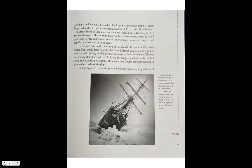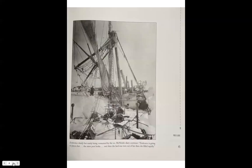On this page, the picture has a caption that says: The pressure grew stronger, forcing the ship on its side when a massive floe rammed against it on October 19, 1915. We have sprung a leak. I am working all night trying to stop it. The pressure is getting worse, McNish wrote. This picture's caption says: Endurance, slowly but surely being consumed by the ice. McNish's diary continues: Endurance is going to pieces fast. The stern broke, posts and then the keel was torn out of her, then she filled rapidly.